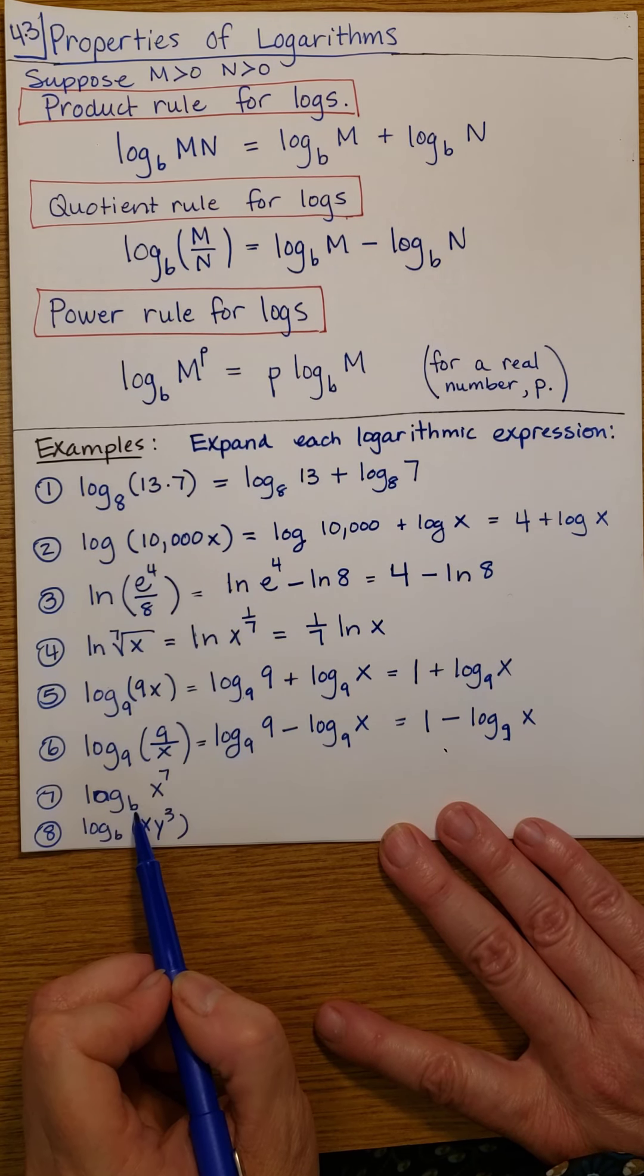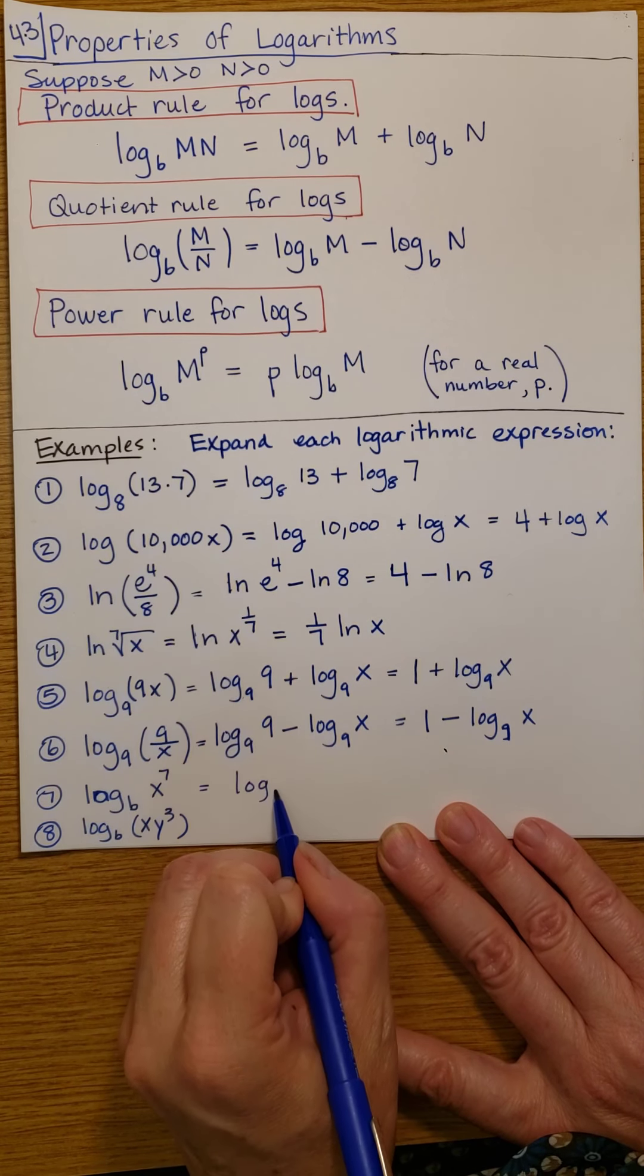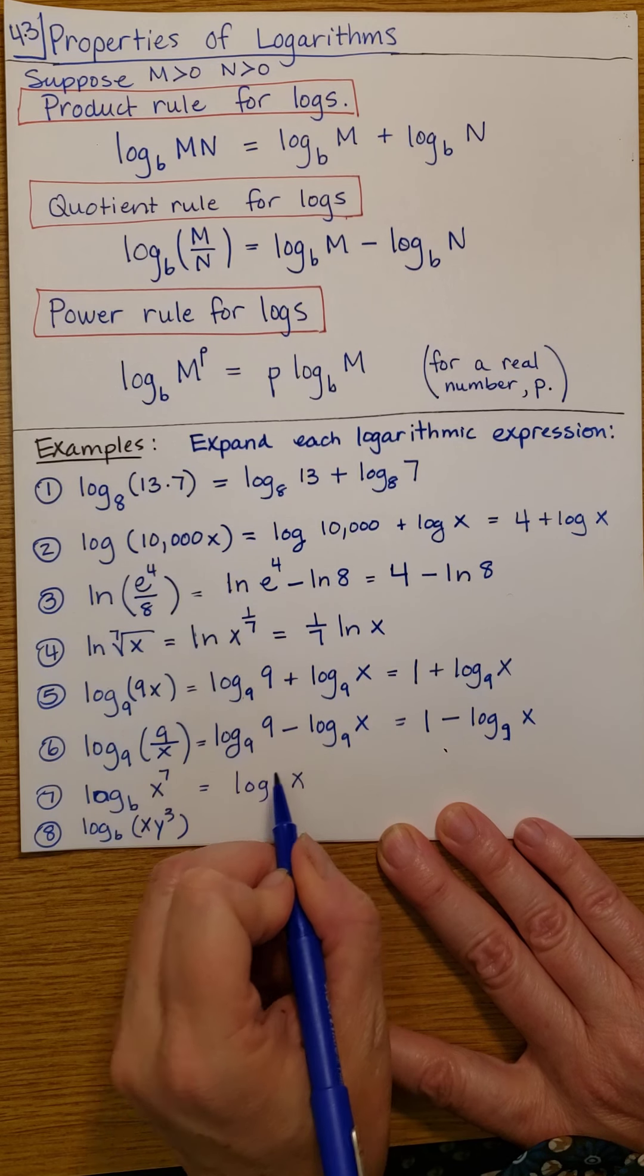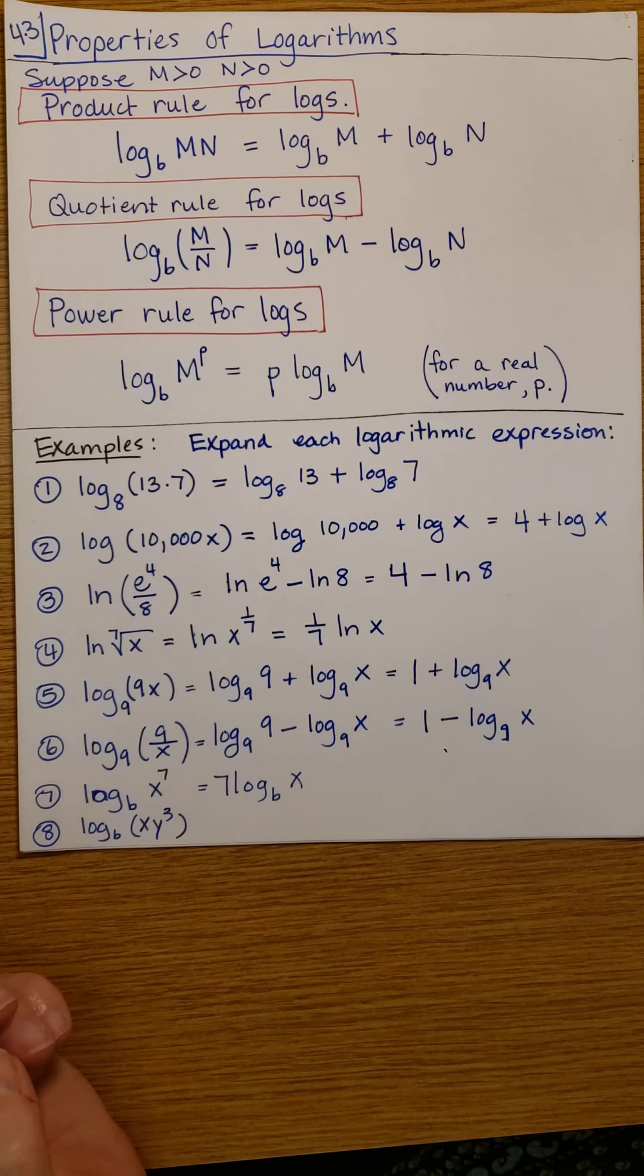Here, the base is not specified, but we have a power. So we know it's log b of x. And that power can come out front, so it's 7 times log b of x.